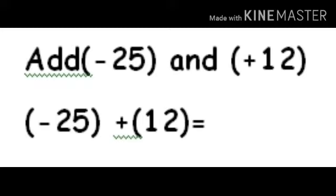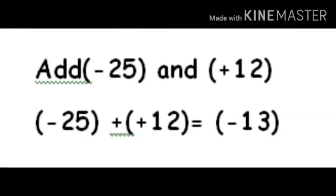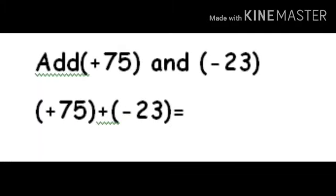Let's see the problem: add negative 25 and positive 12. Here we have integers having different signs, so we have to subtract the numbers and write the sign of the greater value. The difference between 25 and 12 is 13, and the sign of the greater value is negative. Hence, the value of negative 25 plus positive 12 is equal to negative 13.